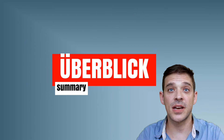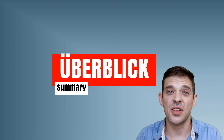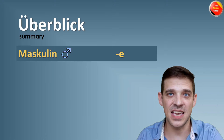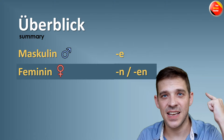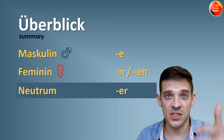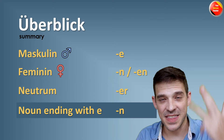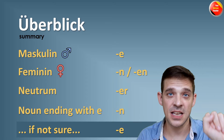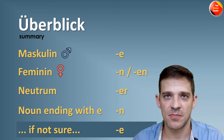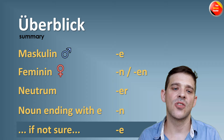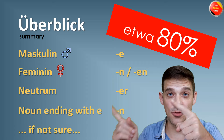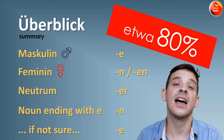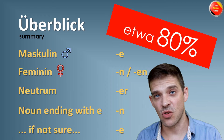Überblick — a summary of the six tips. Nummer eins: masculine nouns add E. Nummer zwei: feminine nouns add N or EN. Nummer drei: neutral nouns add ER. Nummer vier: nouns ending with E always add N. And nummer fünf — in case you forgot everything — always add E, because E is the most common plural ending. With these rules you're going to be fine in around 80% of cases.